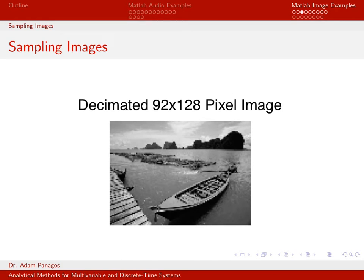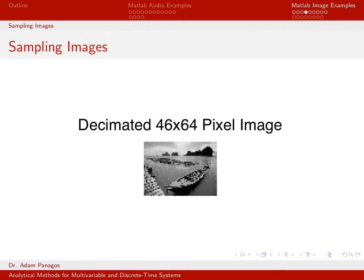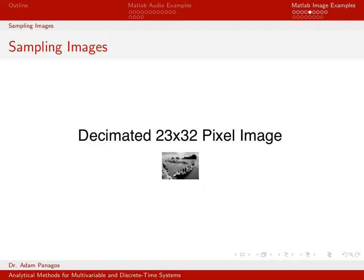Taking the 184 by 256 image and halving it again, it still looks like the same image — an ocean or lake with a boat, mountains in the background, and a dock. But you can see it's starting to look pixelated. Going even further to 46 by 64, the person on the boat is barely visible. I'm definitely losing information as I down-sample. The worst case we'll look at is the 23 by 32 image.